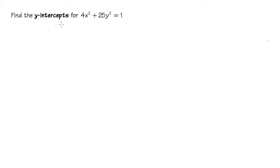For this question, we are going to find y-intercepts for 4x² + 25y² = 1. Whenever we are trying to find y-intercepts, we are going to let x equal to 0, and then we will solve for y.